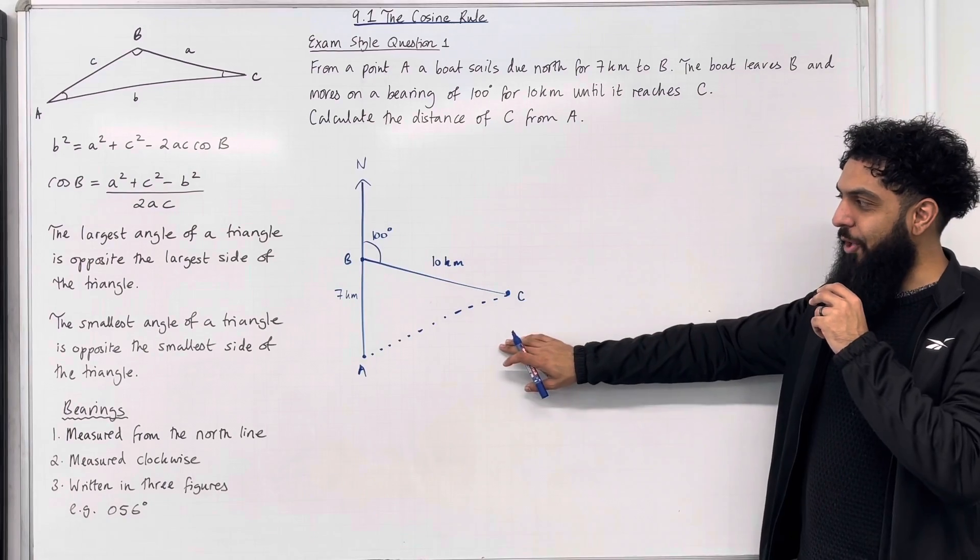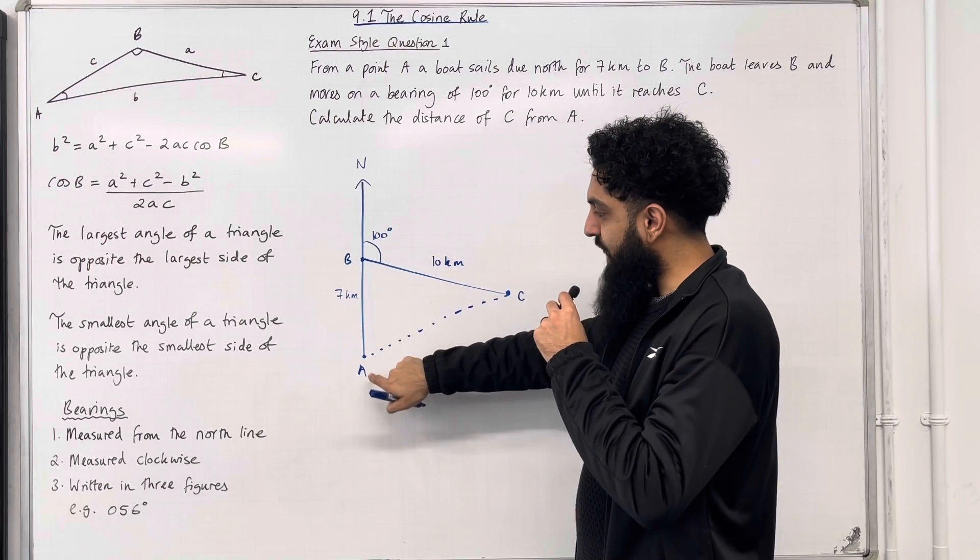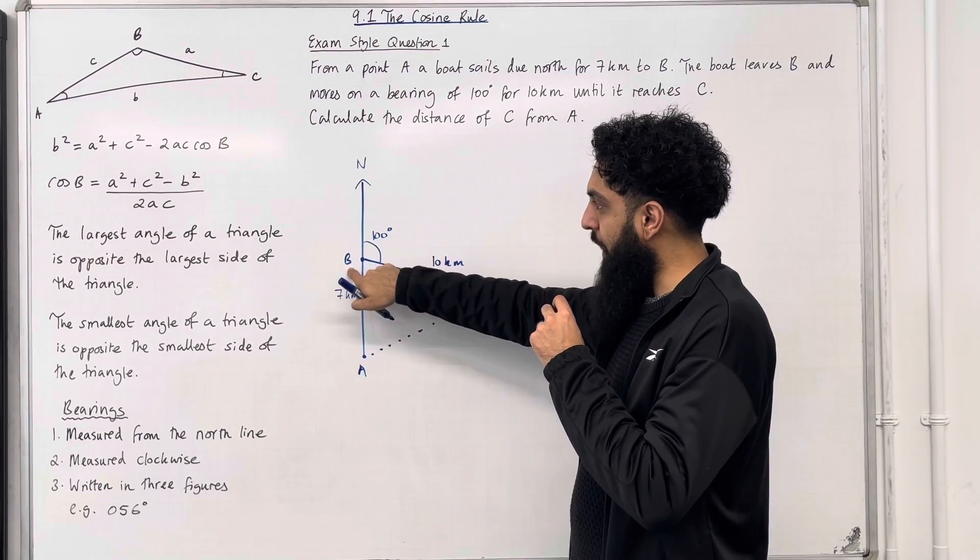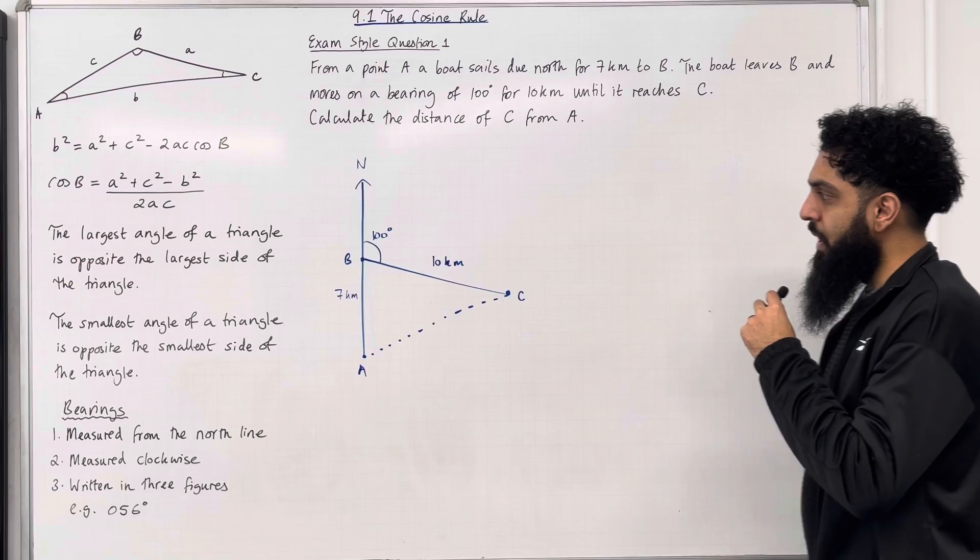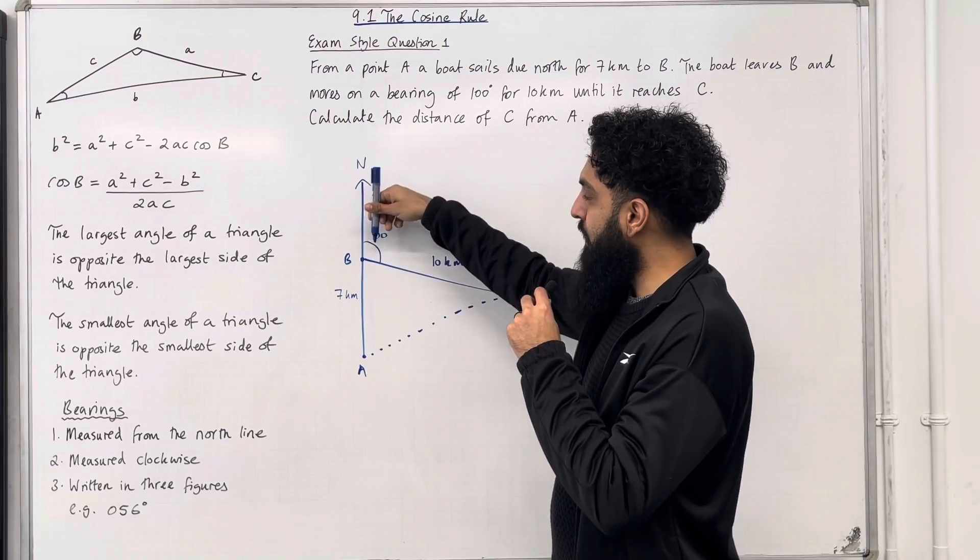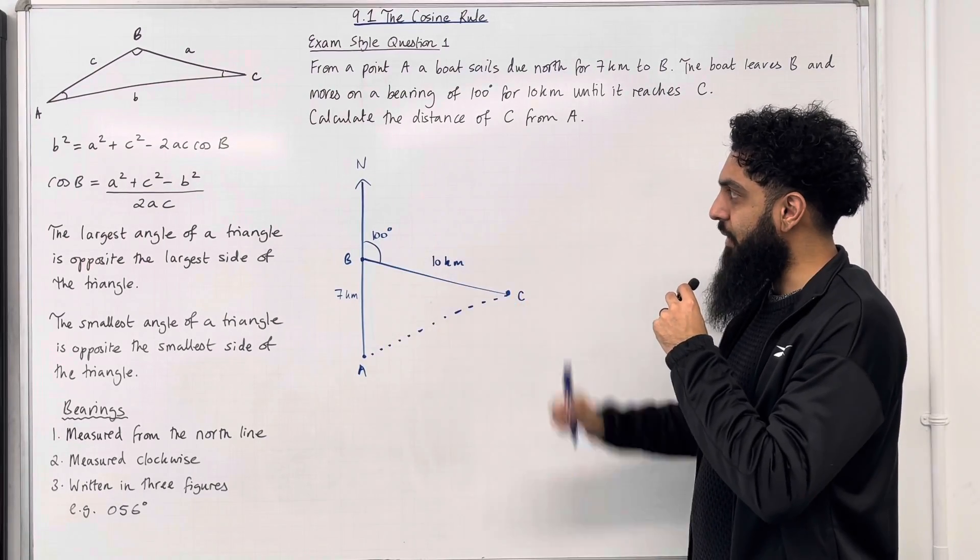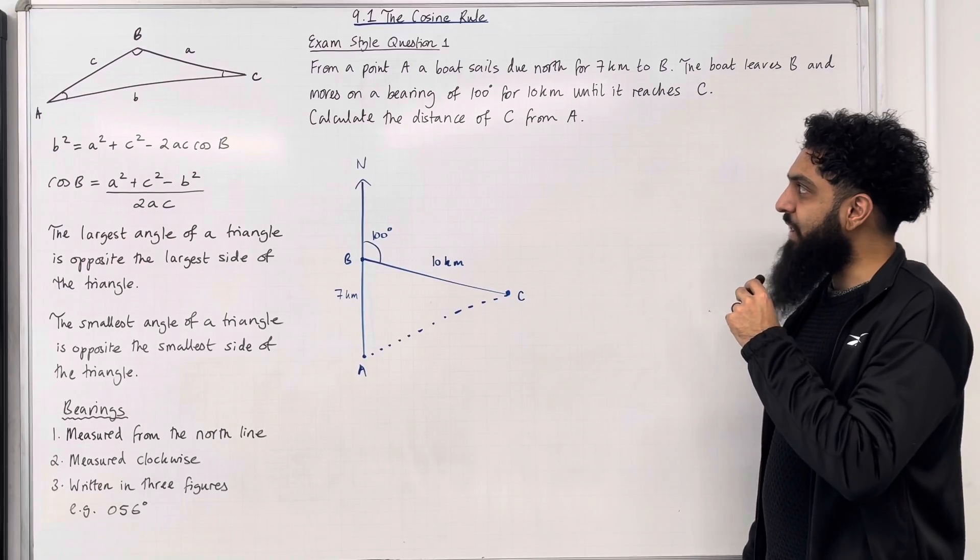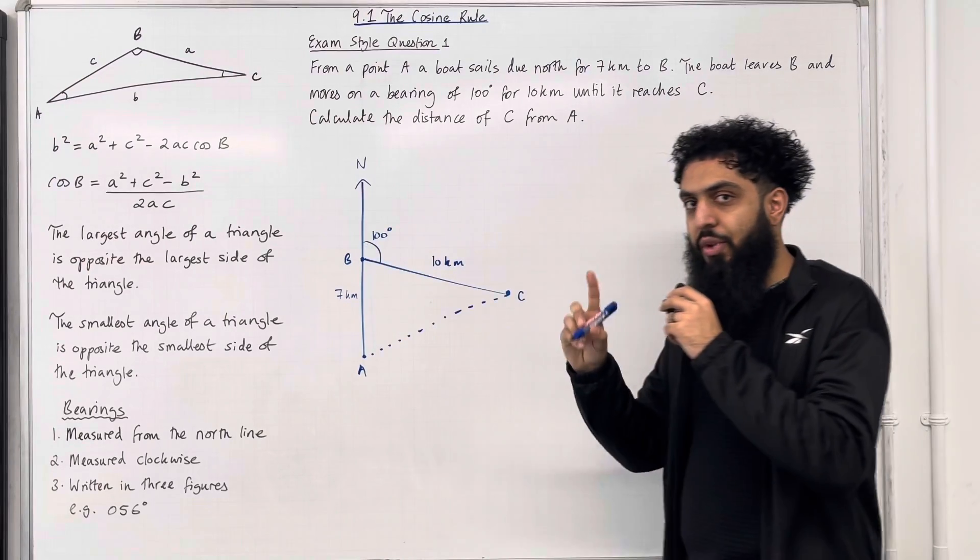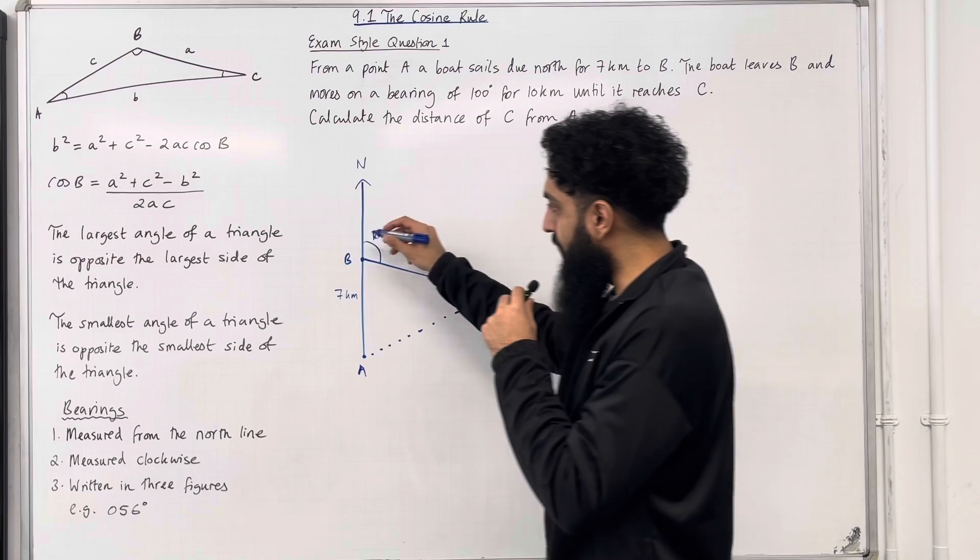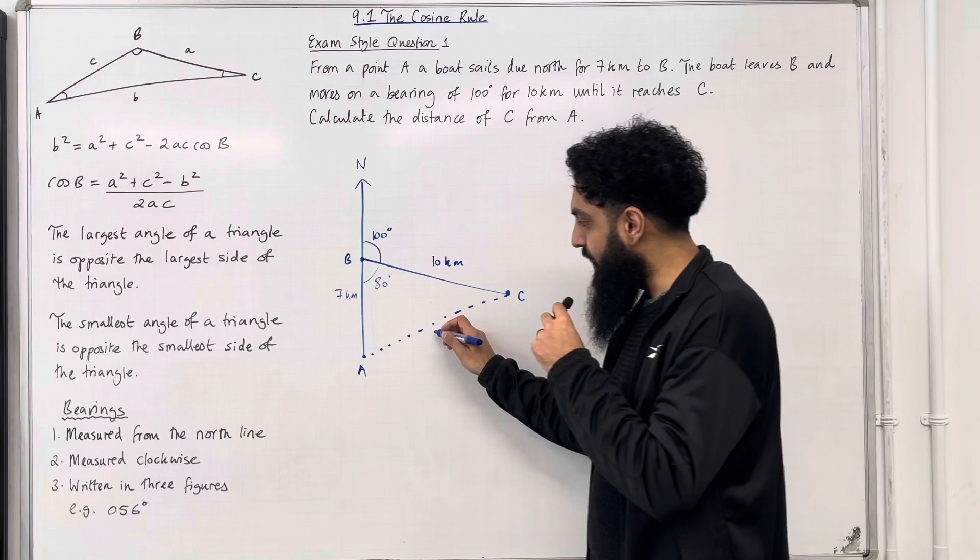Ladies and gents, here is my diagram. From point A, we sail due north for 7km to point B. The boat leaves B and moves on a bearing of 100 degrees for 10km until it reaches C. At B, we have to draw a north line and move clockwise 100 degrees to point C, such that BC is 10km. Now we want to calculate the distance of C from A. Before we do this, notice that we have a straight line. Angles on a straight line add up to 180 degrees. So if this part is 100 degrees, this part over here has to be 80 degrees.